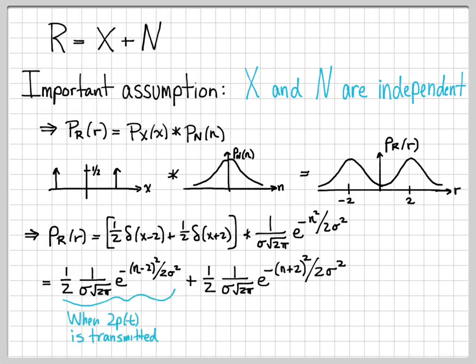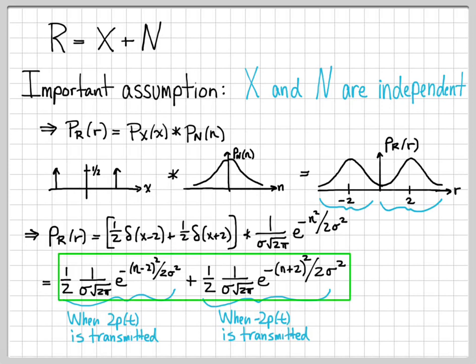The first part corresponds to when 2P(T) is transmitted, represented by one of the Gaussian humps in the cartoon plot. The second piece comes from when minus 2P(T) is transmitted. So we have computed the density function for the random variable R.